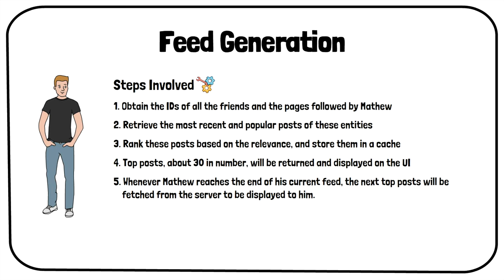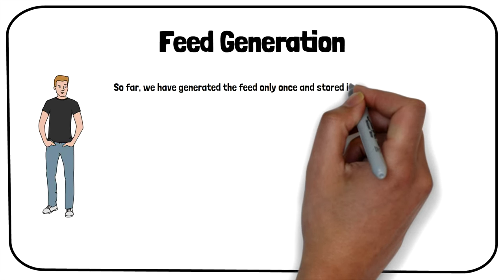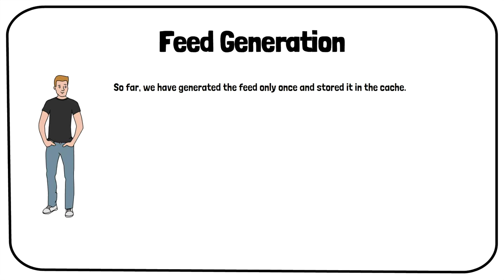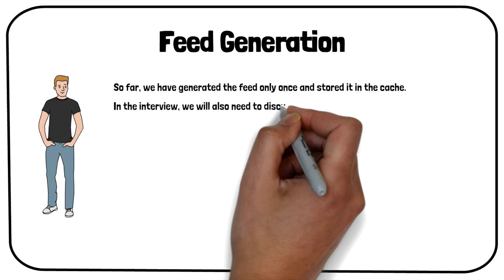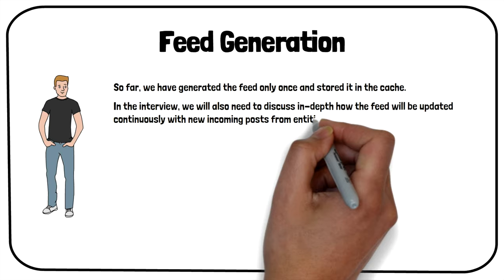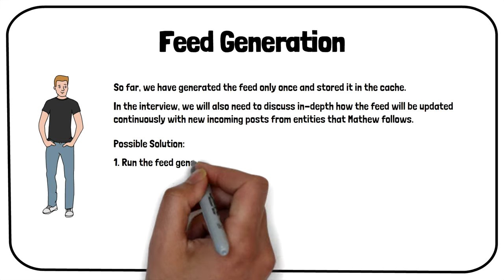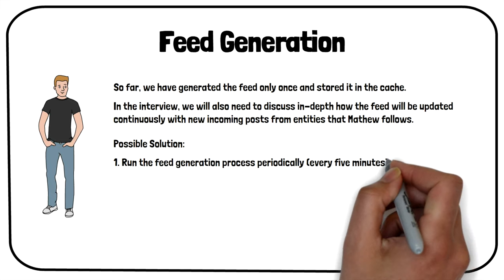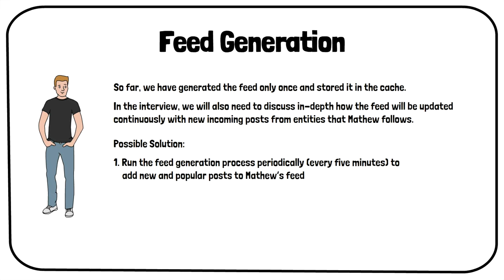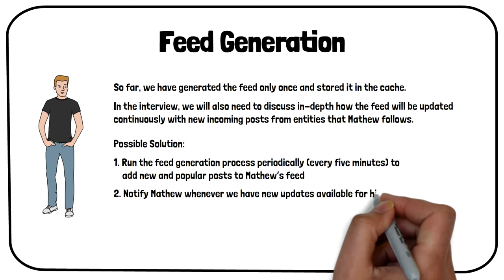This is a very high-level description of the feed generation. So far, we have generated the feed only once and stored it in the cache. In the interview, we will also need to discuss in depth how the feed will be updated continuously with new incoming posts from entities that Matthew follows. One possible solution is that we can keep generating the feed periodically to add new and popular posts to Matthew's feed. We can run the generation process every five minutes and notify Matthew whenever we have new updates available for him to fetch.